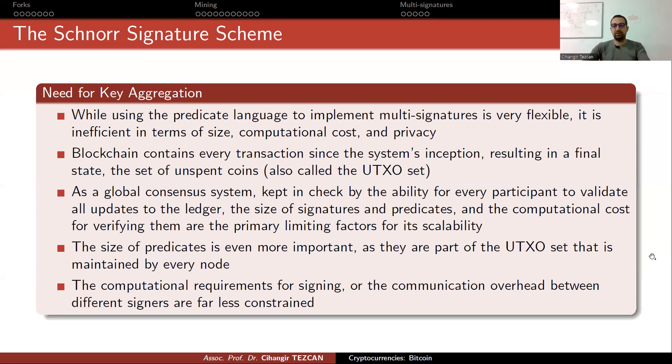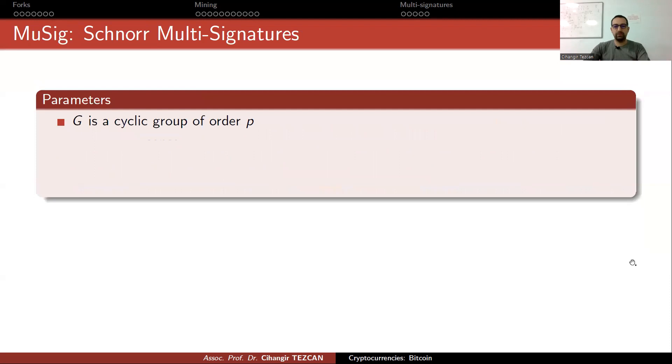This is also important, by the way. The size of signatures are really important. And there are different signature algorithms in cryptography, which provide short signatures. And I'm guessing that in the future, Ethereum will add those algorithms in their system. Because if you have smaller signatures, you can put more data on the blockchain. The size of predicates is even more important as they are part of the UTXO set that is maintained by every node. You also keep them in the memory. The computational requirements for signing or the communication overhead between different signers are far less constrained. Since you are communicating with each other, you don't mind that kind of communication. But for the nodes, it is a bigger problem. So, for this reason, there is a protocol called MuSig for Schnorr multi-signatures. And this is actually the thing that is added to Bitcoin.